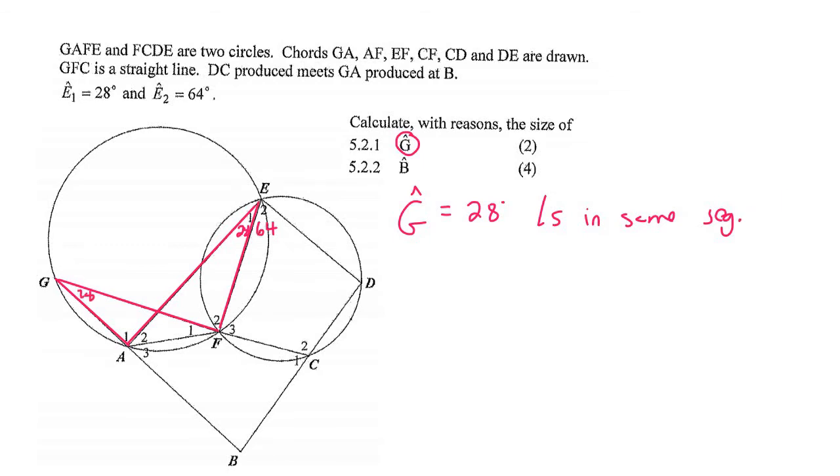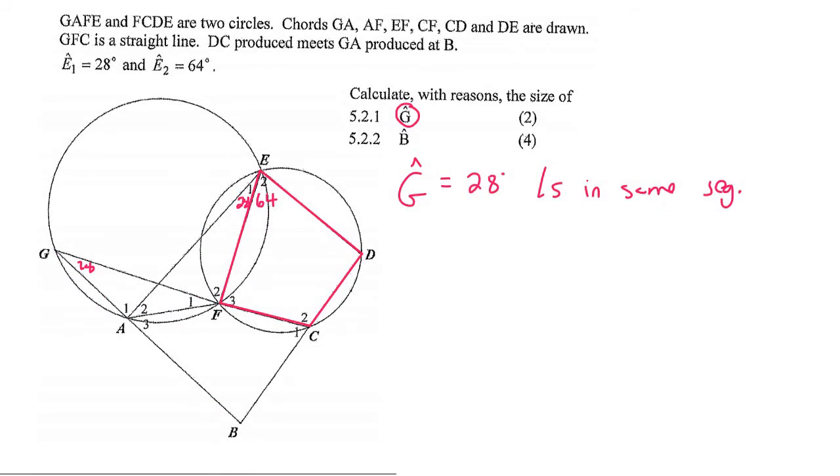Now for four marks, we need to work out the angle B, which is this one over here. So if you look at this cyclic quad, we know that the opposite angles of a cyclic quad add up to 180. So we could work out C2. So angle C2 would be 180 minus 64, and that's because of opposite angles of a cyclic quad. So that means that angle C2 would be 116 degrees.